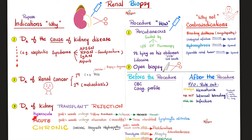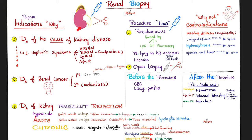Quick side note: how do you treat hyperacute rejection? You cannot treat it — you can only prevent it by doing matching before surgery, such as matching ABO blood groups, RH, MHC, etc. Acute rejection is treated with immunosuppressive medications. Chronic rejection cannot be treated, though we can try immunosuppressives hoping it's a misdiagnosed acute rejection. A failed rejection will require removal of the organ. Also, when receiving a new kidney, the doctor does not remove one of your original kidneys — the new kidney is placed below the existing one, usually in the lower abdomen or pelvis.